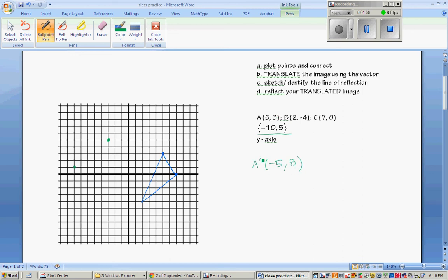So our new point, a prime, would be negative 5, 8. And if I go back 5 and up 8, lo and behold, it does look right. So you can do it by counting or by adding the vector.